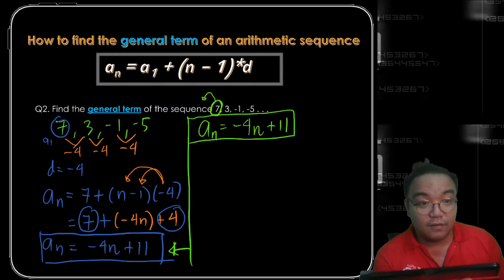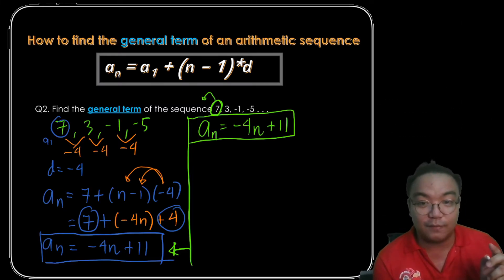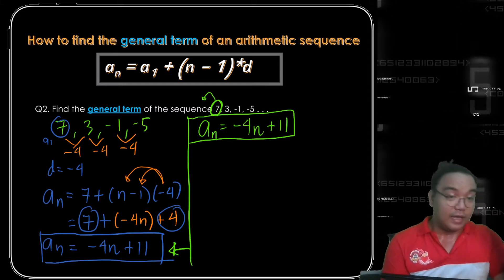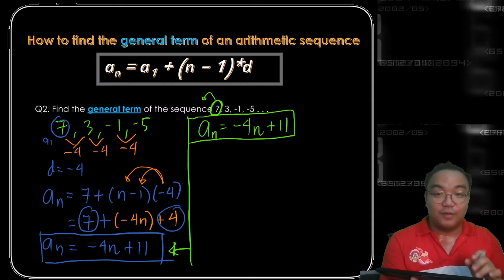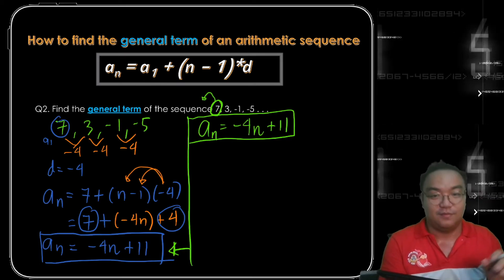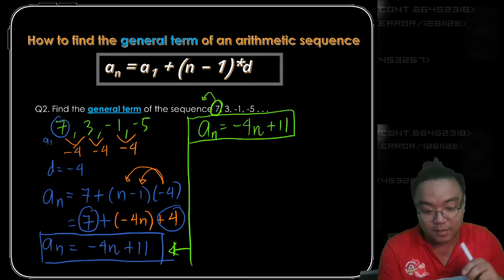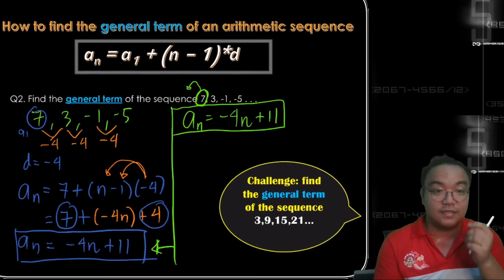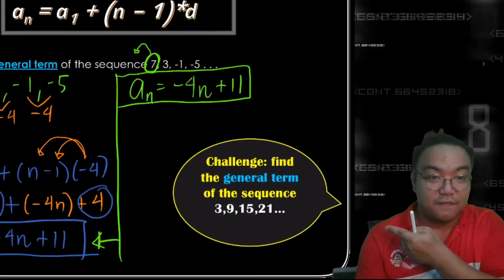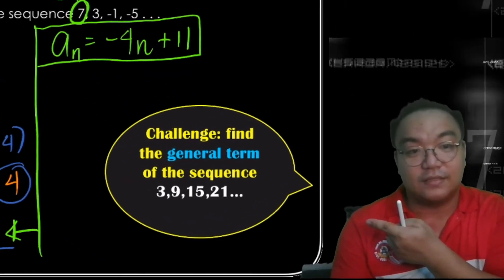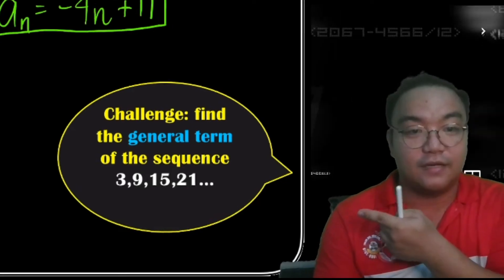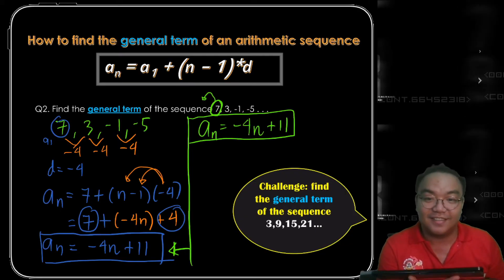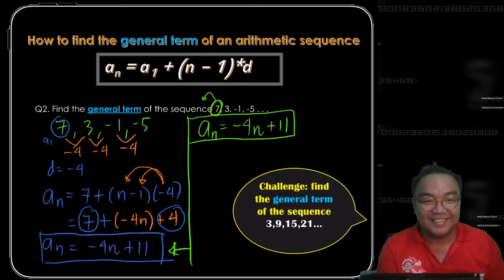As always, I hope you learned from this video! I'll leave a challenge question for you — put your answers in the comments below. The question is: find the general term of the sequence 3, 9, 15, 21. I will see you in the next lesson — peace!